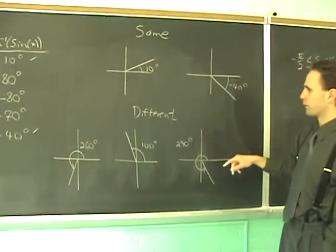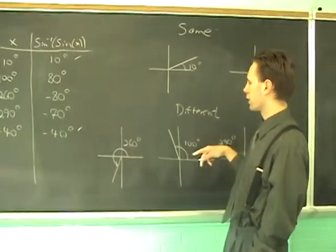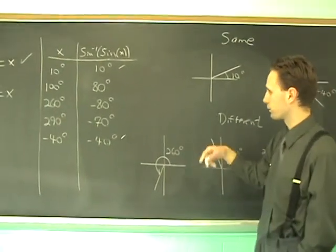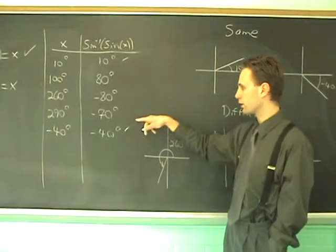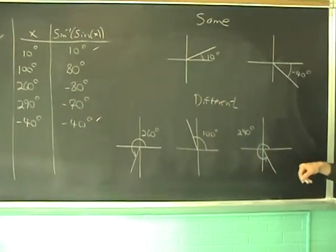Because if you do it with the 290, if you take the sine of 290 and take the inverse sine of that, you won't get 290 back. It's going to give you minus 70. What is going on?